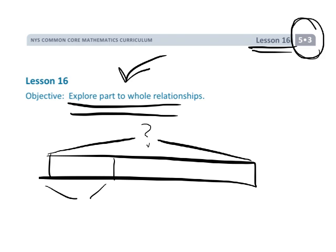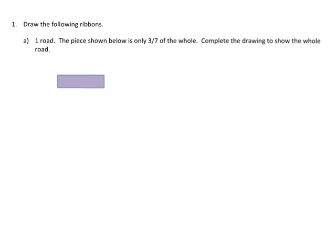In this example it says to draw the ribbon. We've got one road and I'm choosing this problem because the questions are not well explained. It says the piece shown below is three-sevenths of the whole, complete the drawing to show the whole road. So they're saying this is supposed to be one big long tape diagram and so far they've only shown us three-sevenths of what we're supposed to see.